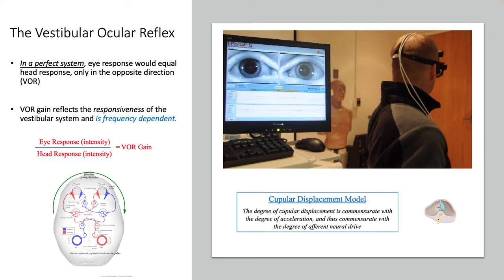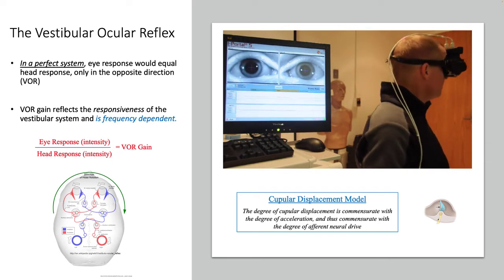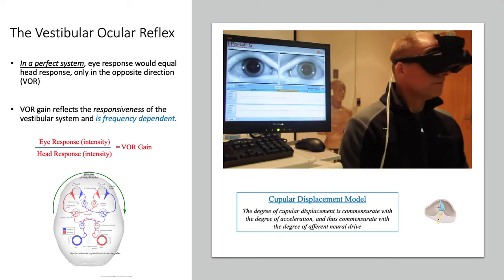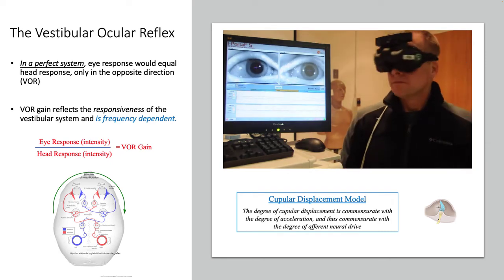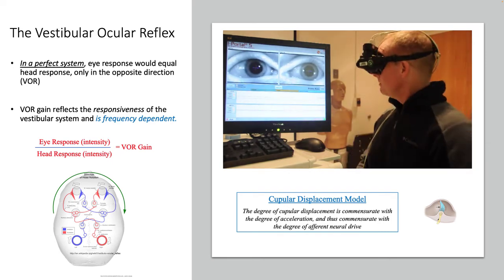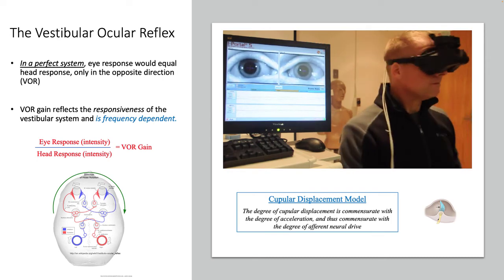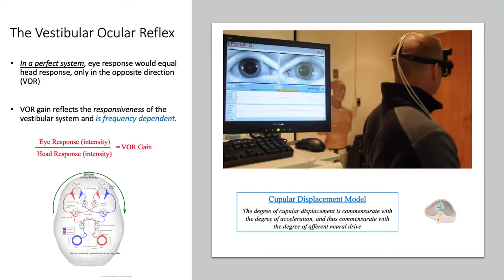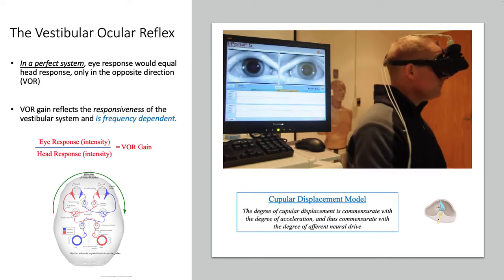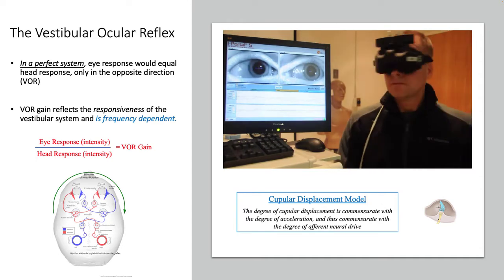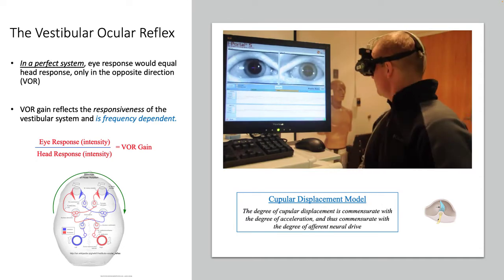The VOR is also frequency dependent. As I move my head faster, I generate a faster nystagmus VOR. As I move my head slower, I generate a slower nystagmus VOR.